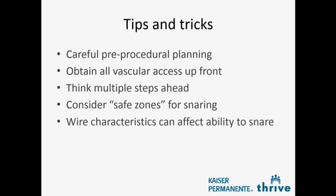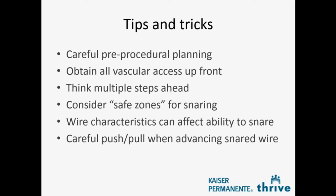Wire characteristics are very important. Certain wires are favorable for snaring and certain wires are not. You can kink or fracture a wire — for example, a standard 0.035 J wire is probably not the right wire to snare, as you can uncoil it, which is dangerous. A nitinol-type wire or a glide wire snares very well. Also think about the careful push-and-pull: once you've created the snare AV rail, if you're across friable tissue such as in a post-MI VSD, just pulling on the snare catheter could theoretically slice through tissue — you have to push and pull simultaneously.